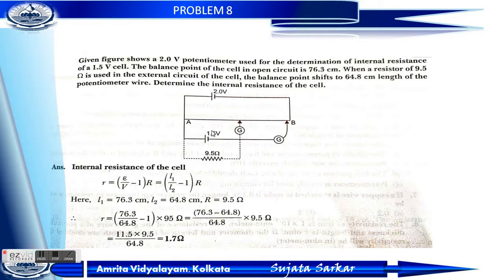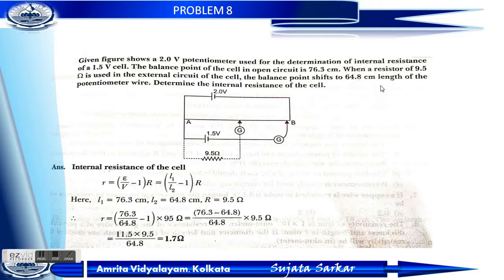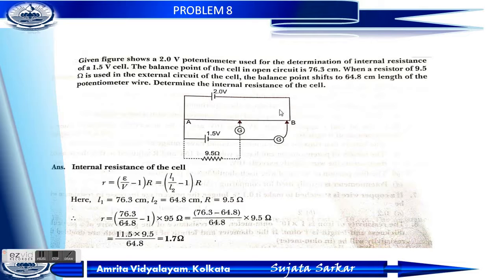The equation for internal resistance of a cell is: r equals (epsilon by V minus 1) into R, which is equivalent to (L1 by L2 minus 1) into R. Given L1 equals 76.3 cm, L2 equals 64.8 cm, and R equals 9.5 ohm. After substituting: r equals (76.3 by 64.8 minus 1) into 9.5, giving r equals 1.7 ohm.